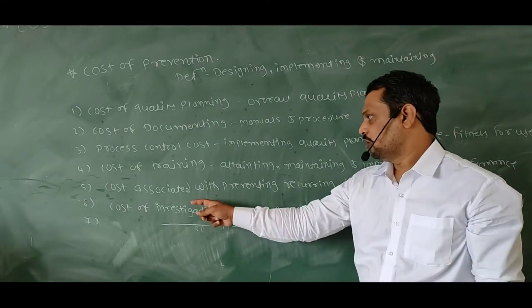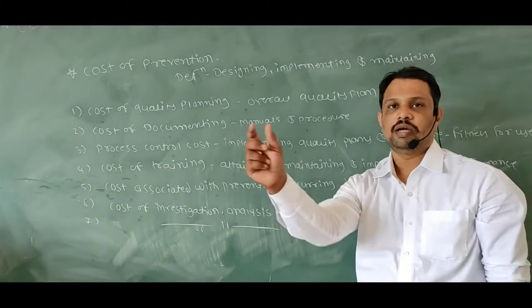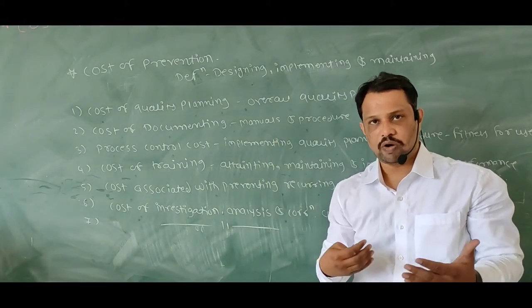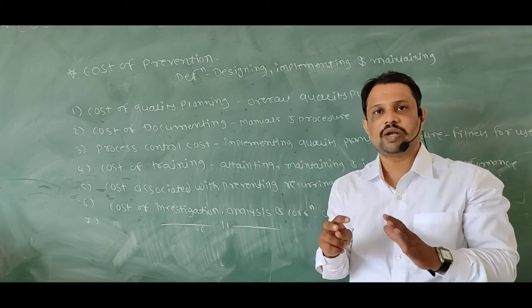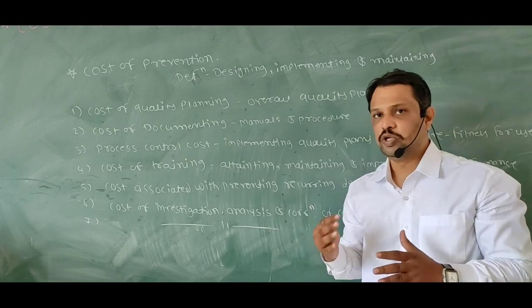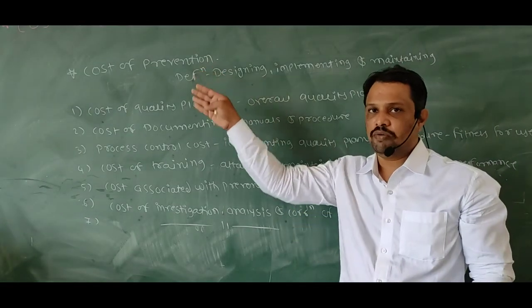After that, cost associated with preventing recurring defects. In a company there are few defects which occur frequently. So we have to take note of all those defects and think by which method you can reduce these. That cost should be in cost of prevention.